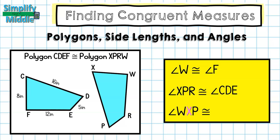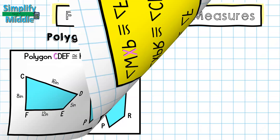For my last one, I have the measure of angle WXP, and X is written first in order. So I'm looking for the first letter in order on the other polygon, which is C. So the angle WXP is congruent to the measure of angle FCD. Remember, C just needs to be in the middle.